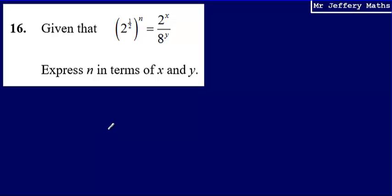This is question 16. We're told that given that 2 to the power of half, raised to the power of n, is equal to 2 to the power of x divided by 8 to the power of y. We're asked to express n in terms of x and y.